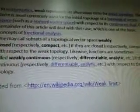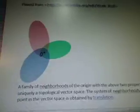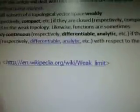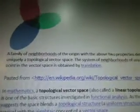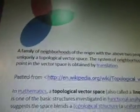Oh my god, it just repeats itself. Anyways, that's not a weak limit — that's what it looks like. A family of neighborhoods of the origin with the above two properties determines uniquely a topological vector space.